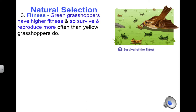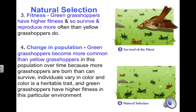What changes in the population might you expect to happen after many generations? Over time, green grasshoppers would be more common than yellow grasshoppers. Since those with a green body color survive and reproduce more, they are able to pass this trait to their offspring. Since those with yellow bodies don't survive well, there will be fewer individuals to survive and pass on the trait of yellow bodies. This whole process describes how natural selection works.